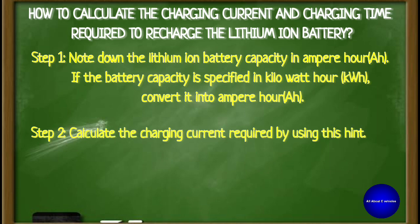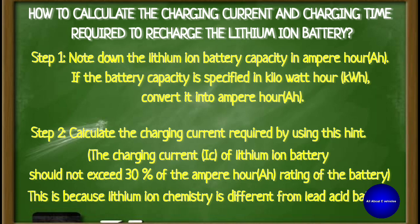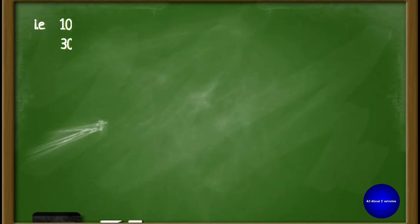Step 2: Calculate the charging current required. The charging current of a lithium-ion battery should not exceed 30% of the ampere-hour rating. This is because lithium-ion battery chemistry is different from lead-acid battery chemistry. That is, you can take 10% for lead-acid battery and 30% for lithium-ion battery of the ampere-hour rating.